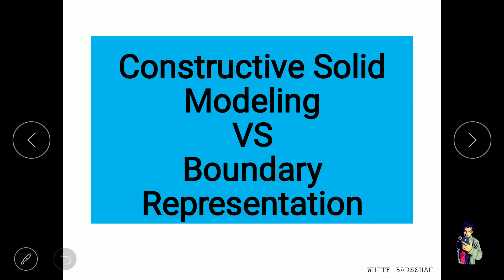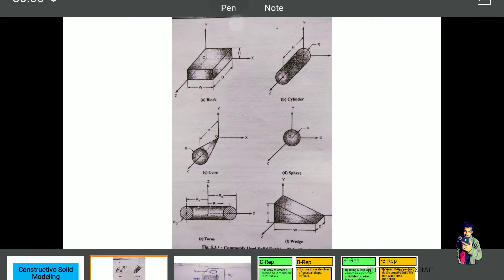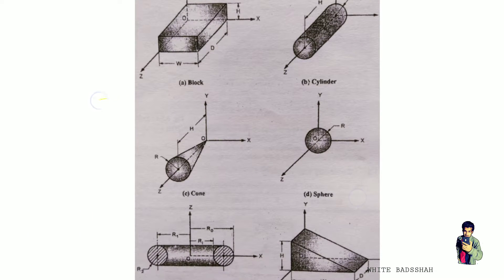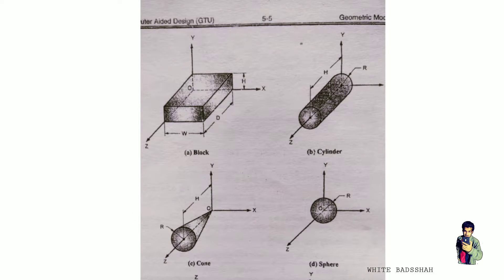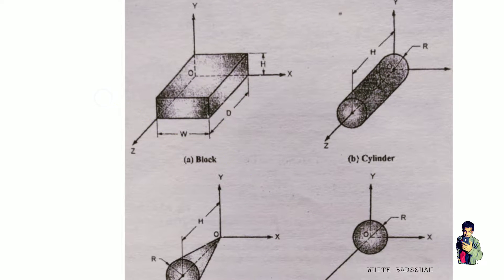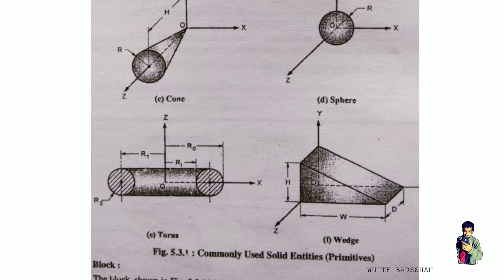Let's discuss the difference between Constructive Solid Geometry, also known as CSG, and Boundary Representation, also known as B-Rep. Some primitives available for making a model using Constructive Solid Geometry include a block, cylinder, cone, sphere, torus, and wedges. These are the primitives which help us to make a model.